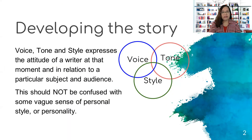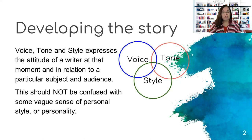When writing a feature article, there are three other elements that you should keep in mind as you develop the story. And these are voice, tone, and style, which express the attitude of a writer at that moment or in relation to the particular subject and targeted audience. This should not be confused with some vague sense of personal style or personality of the writer. These are technical terms and we shall go through them one by one.